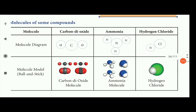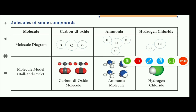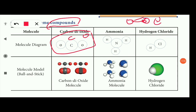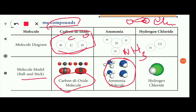Molecules of compounds: different atoms join together to form compounds. Carbon and oxygen — two different atoms — join to form a compound. For example, carbon dioxide: one carbon and two oxygen atoms. Ammonia is NH3 — nitrogen and three hydrogen atoms. Hydrogen chloride is HCl — the symbol and diagram for these molecules are shown.